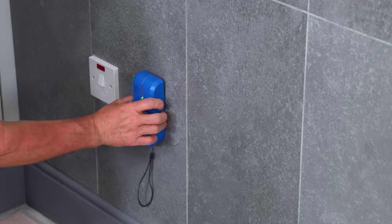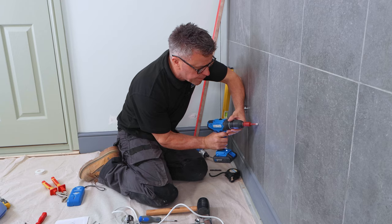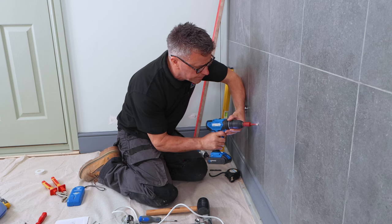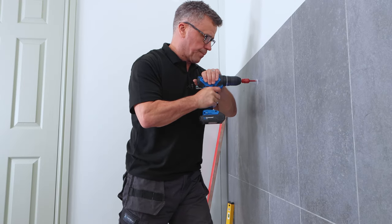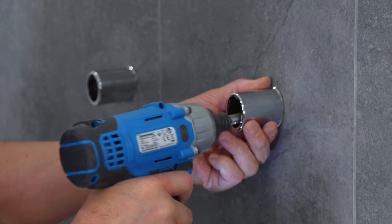It's important to check behind the tiles with the detector to see that there are no pipes or wires there before you start drilling holes. Once you've drilled your holes in the correct position, apply your plug and screw the brackets firmly to the wall.